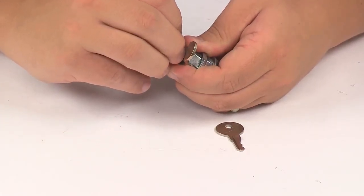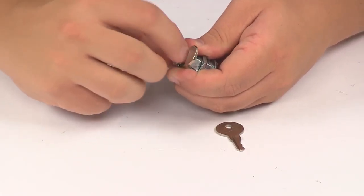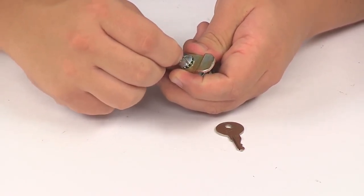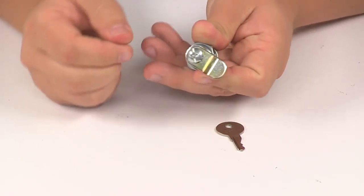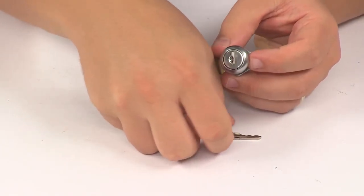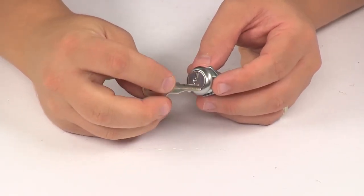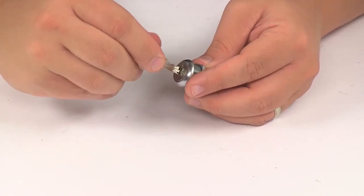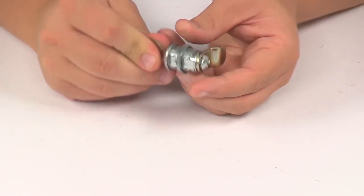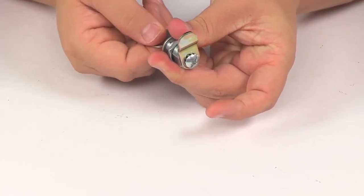This small screw with the serrated washer threads in and can be tightened with a flathead or Phillips head screwdriver.